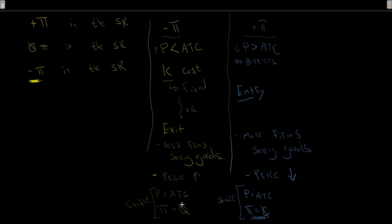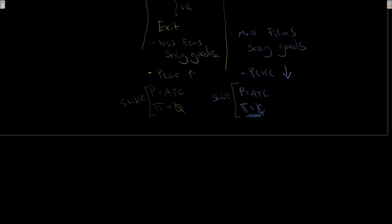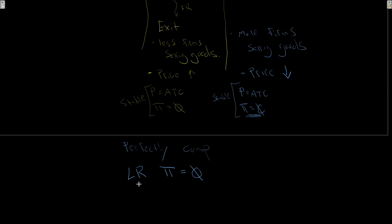What we find is that if we have any profit - either negative or positive - this will entice either exit or entry. It will influence the price up or down until we arrive at this stable solution. For a perfectly competitive market, our long-run economic profit will always equal zero. We can earn short-run profit, but all that's going to do is attract new firms, which will push down our price and bring it back. Some firms can lose money and will exit the industry - the price will go up and we'll arrive at zero profit. So in the long run, zero economic profit.